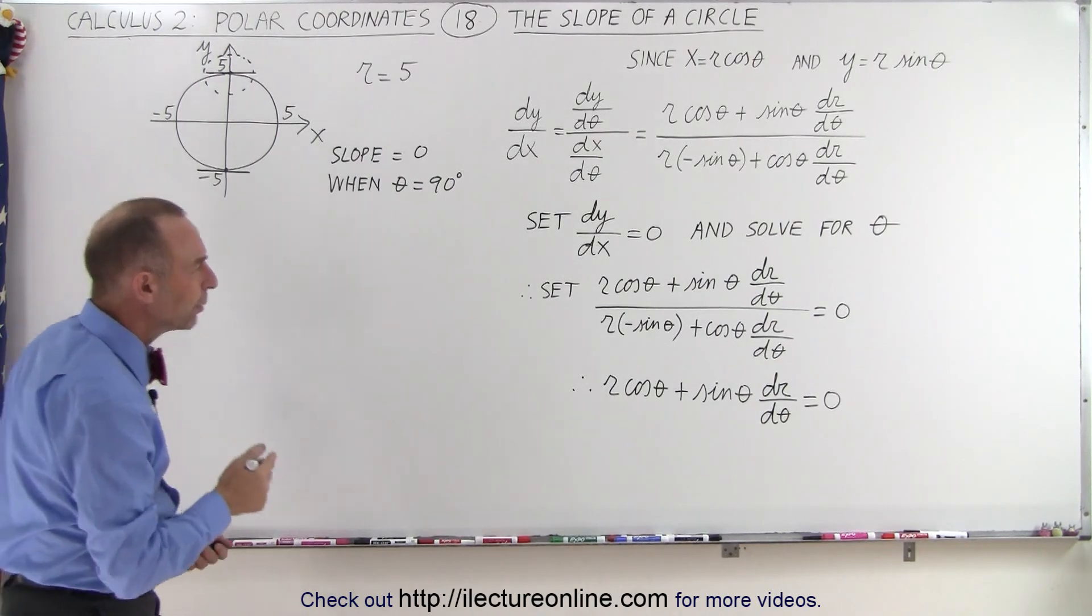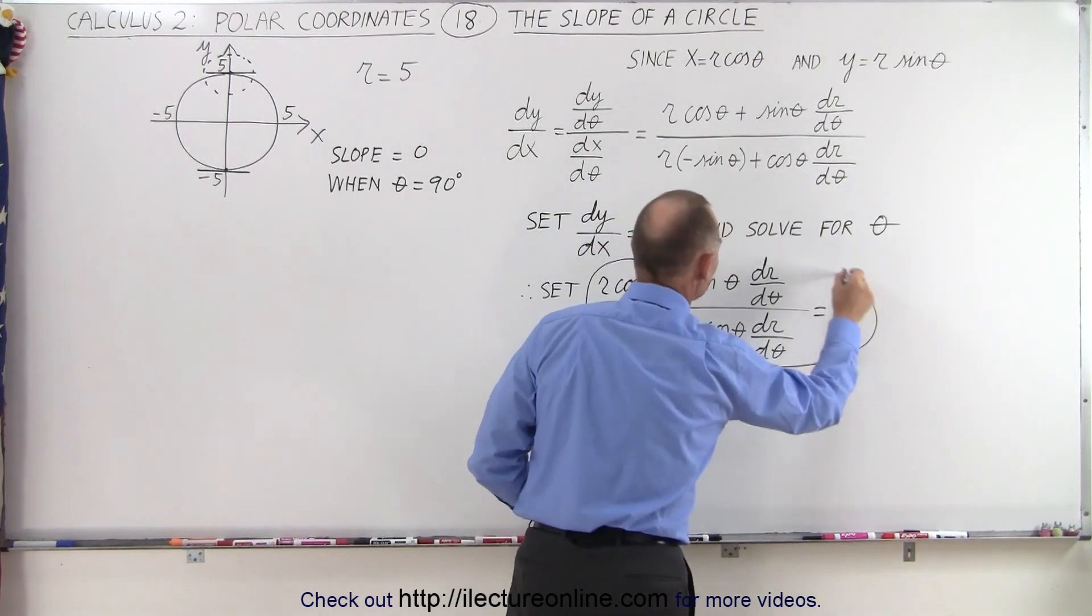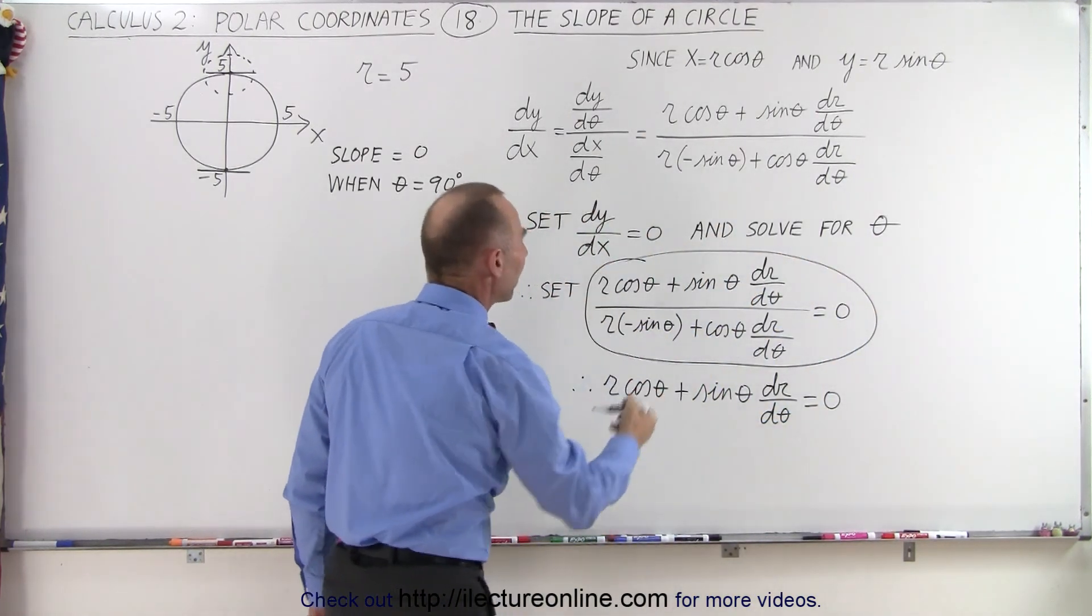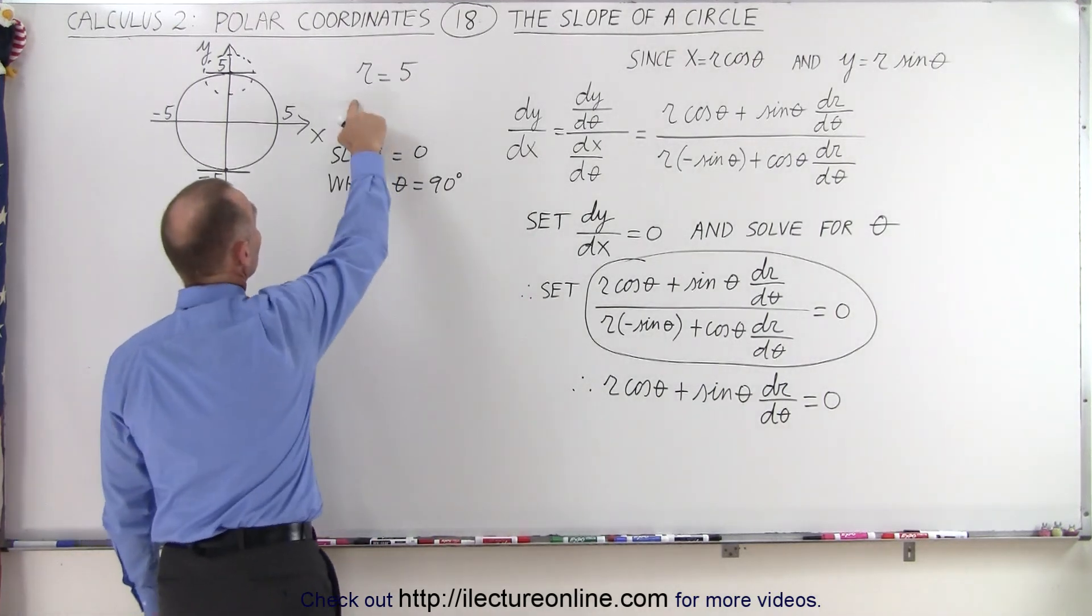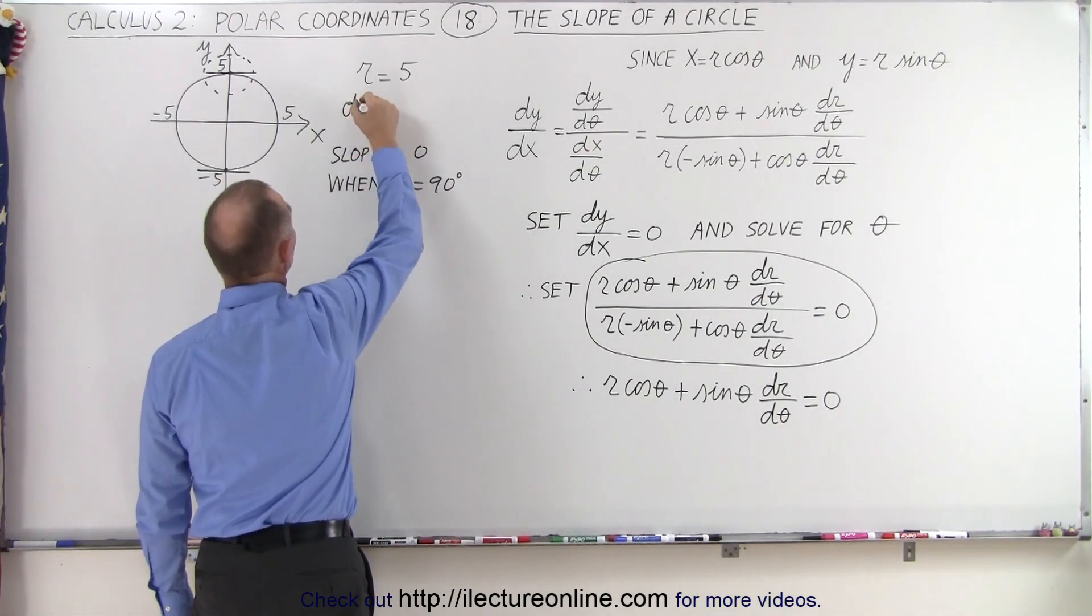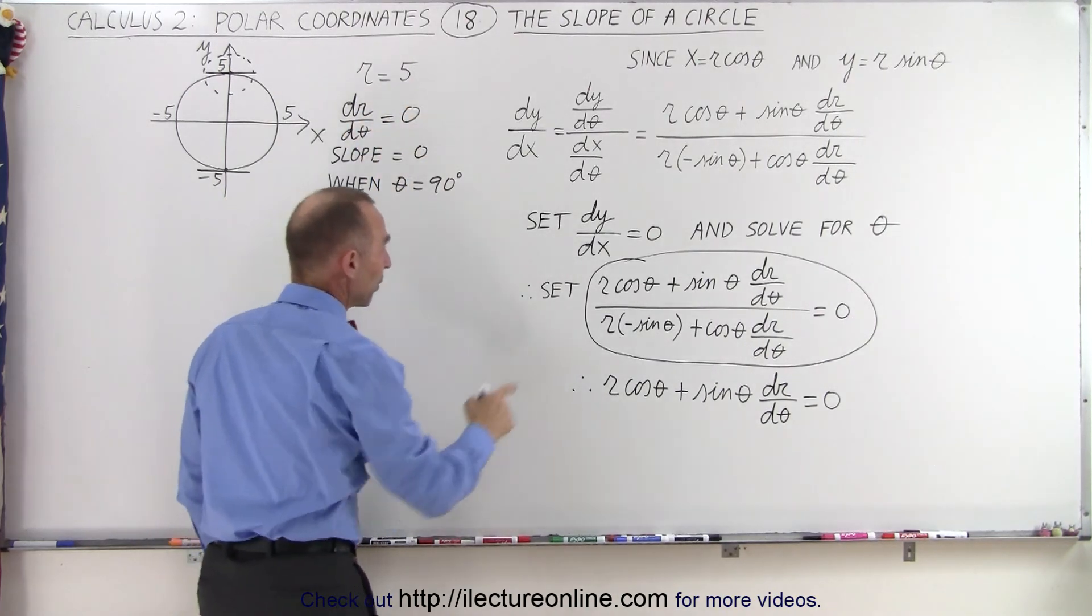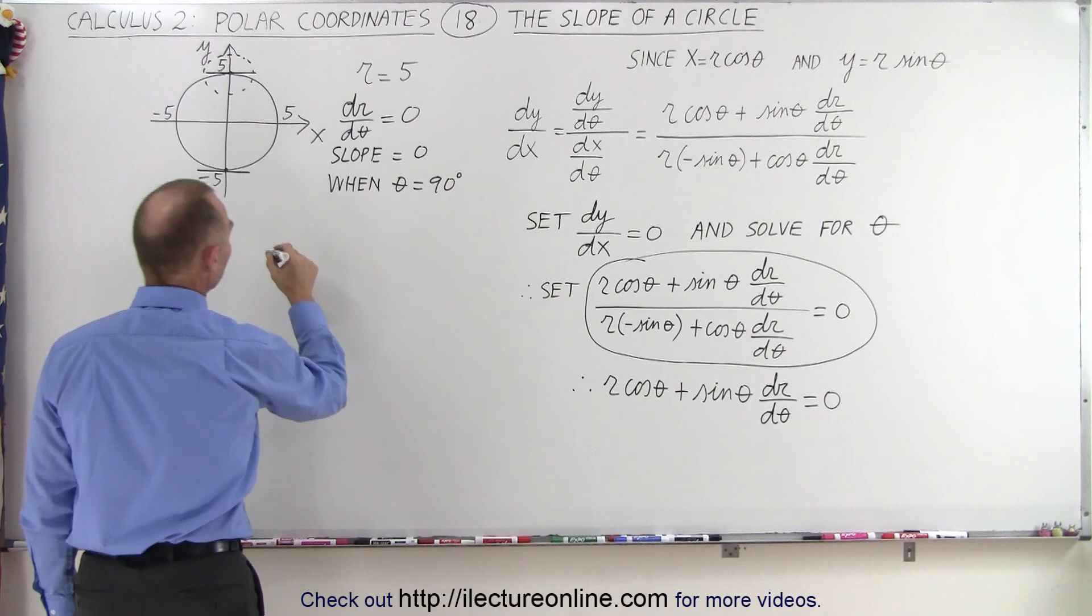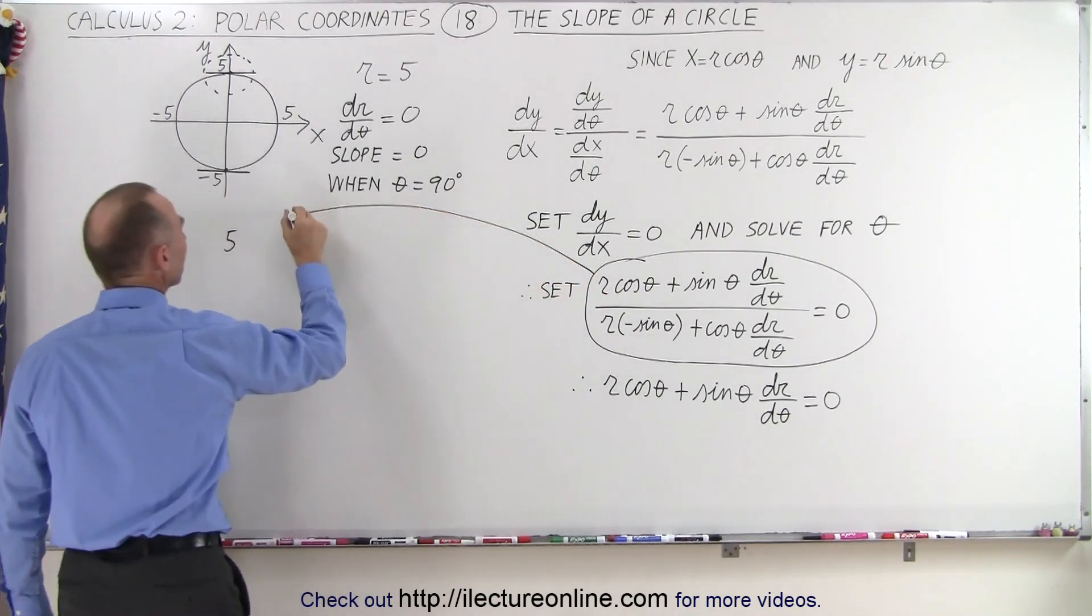So to do that, we're going to go back to our general equation. We're going to use this entire equation right here and plug in all the values for theta and dr/dθ, realizing that if r is equal to 5, that the derivative dr/dθ must therefore equal to 0. So we plug that in here, we end up with r, which is 5. So now we take this equation right here, we come over here.